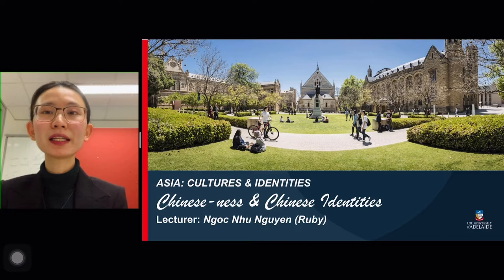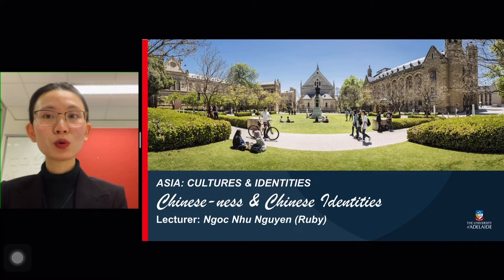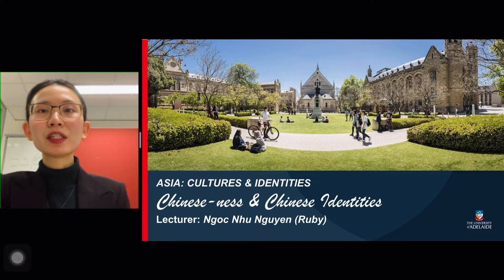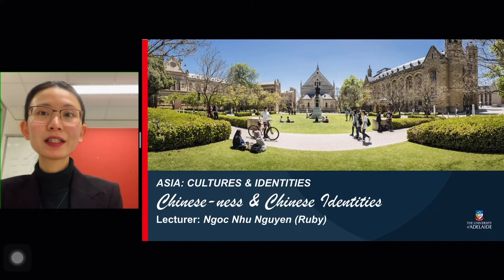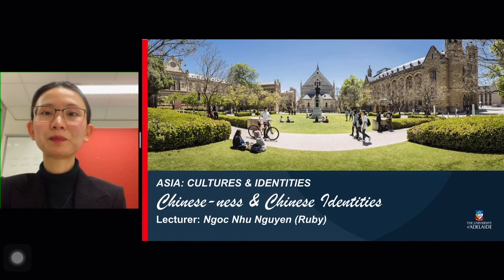Hello students! Welcome to the second week of your elective course, Asia, Cultures and Identities. My name is Ngoc Nguyen, but you can call me Ruby. I will be responsible for the Chinese part of the course that our beloved Jerry often teaches. This week's lecture builds on what you've learned last week about identity and applies that to our key topic about Chinese-ness and Chinese identities, so that we can gain a better understanding of what it means to be Chinese.